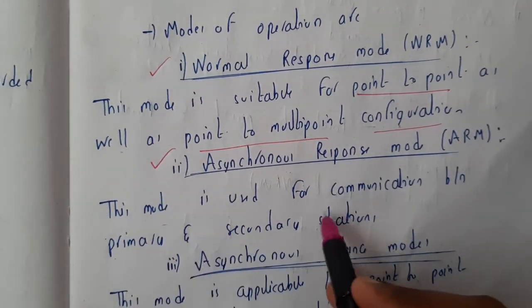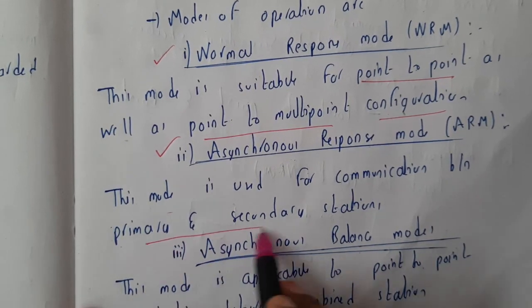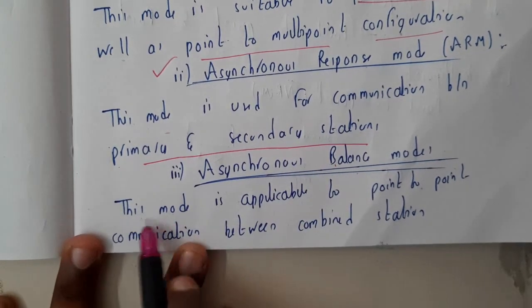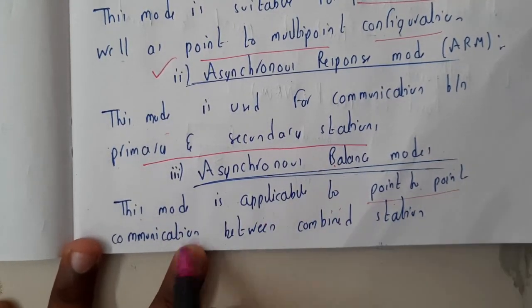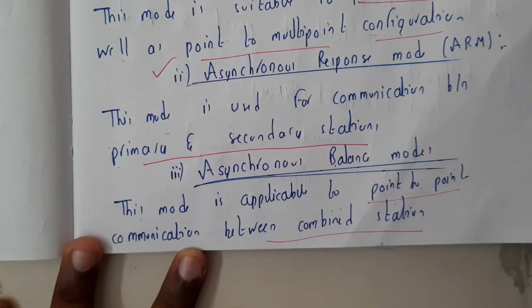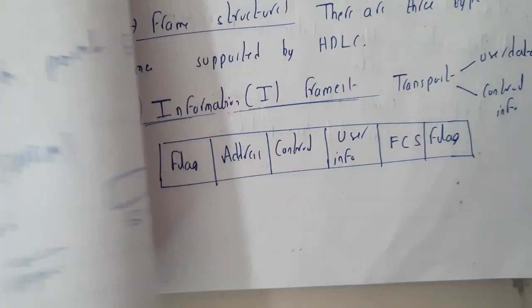Asynchronous mode is used for communication between primary and secondary stations, whereas asynchronous balanced mode is applicable to point-to-point configuration and communication between the combination of stations. We'll be discussing these two in depth with examples so we'll have a small idea.